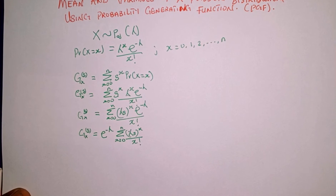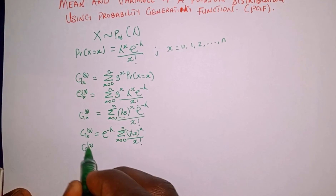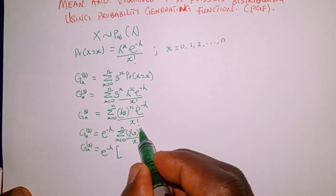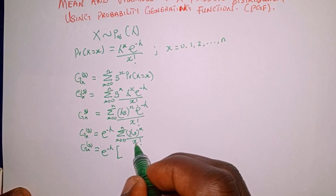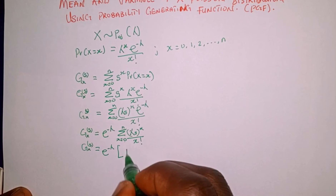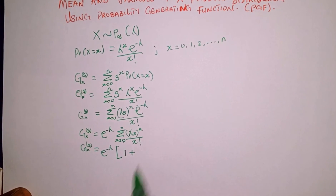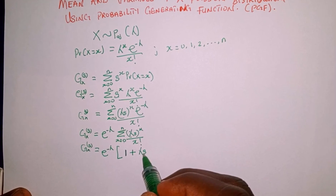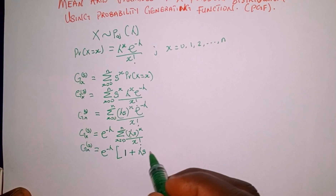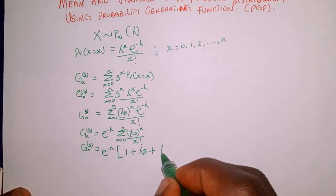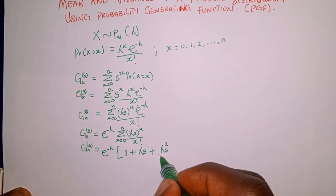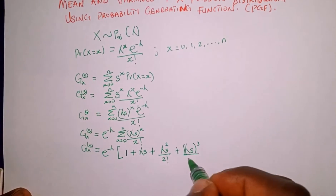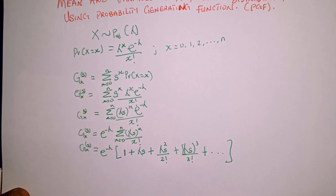Now we take the summation with x from 0 to n. At x equal to 0: any number raised to 0 is 1 and 0 factorial is 1, so we get 1. At x equal to 1: we get lambda s over 1 factorial, which is lambda s. At x equal to 2: we get lambda s squared over 2 factorial. Then plus lambda s cubed over 3 factorial, and so on up to n.